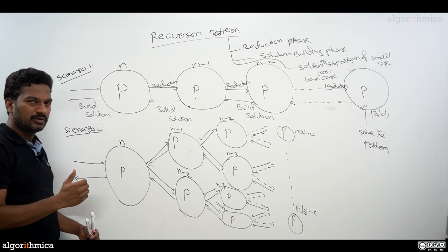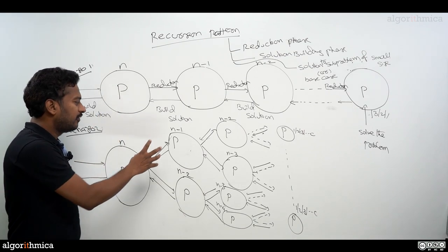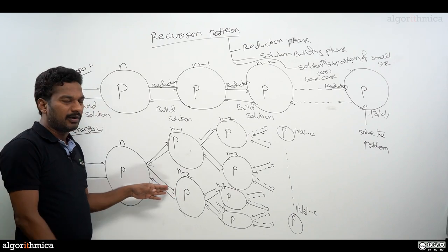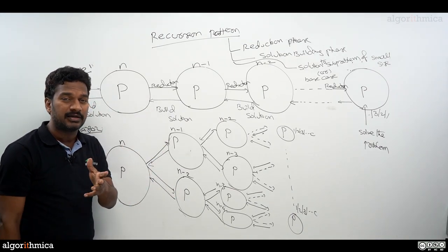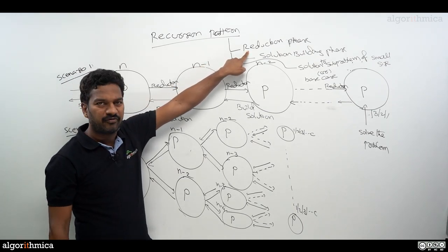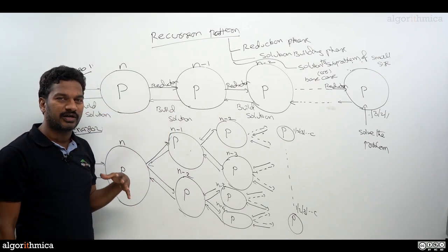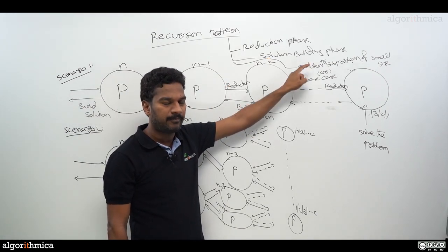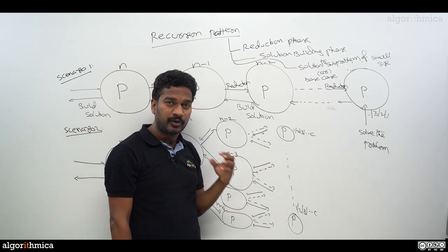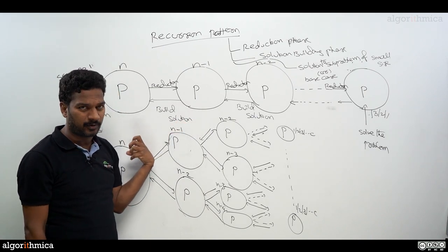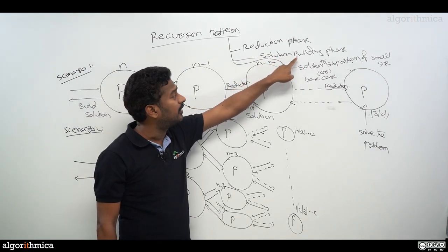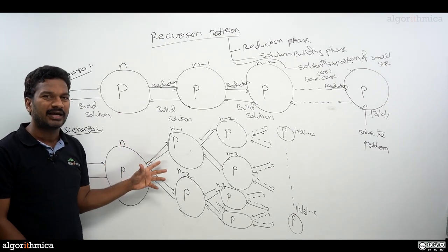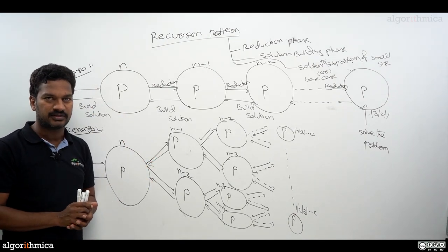So given a problem, the reduction steps keep happening. When you reach a very small size you know how to solve it. Once you have a solution, you keep returning the answer — combining sub-solutions to build a final solution, continuing up until you get the solution to the final problem. This is a more generalized recursion where instead of one sub-problem, we divide into two sub-problems. There's no rule that it must be two — you can have three, four, or any number depending on the problem.